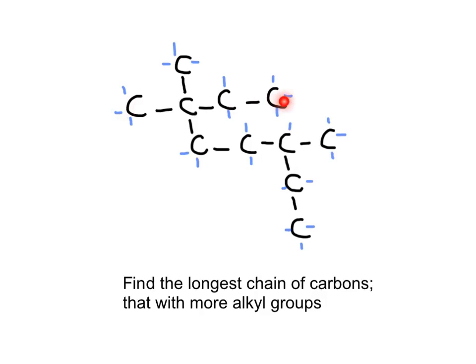Let's name this more complex molecule. We observe there are many more branches in this substance. We need to find the longest hydrocarbon chain, making sure we include more branches. Tracing different paths, we find a chain of six carbons in one direction, then seven in another, and ultimately eight carbons long. So this substance is an octane with branches.